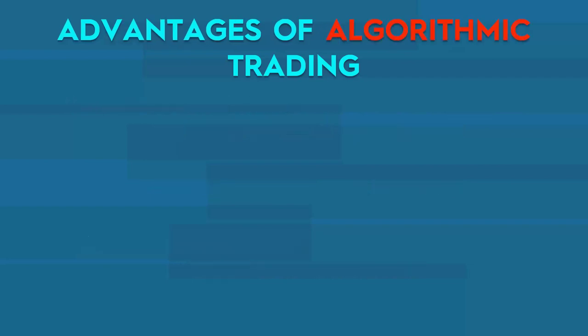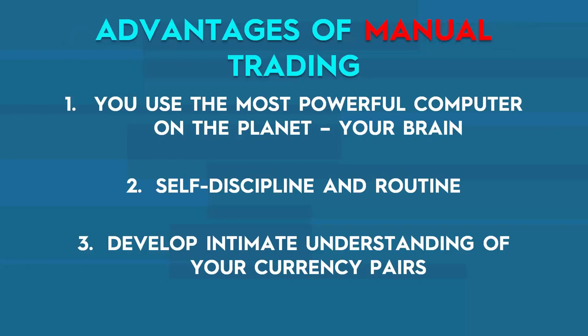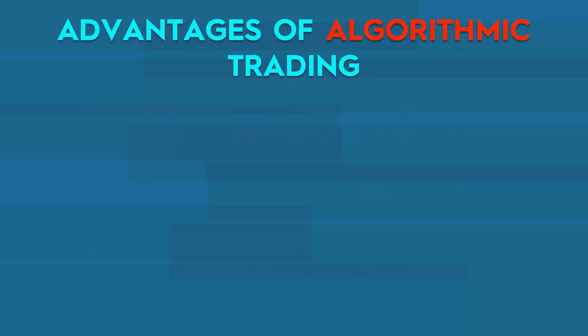Advantages of algorithmic trading. Number one — and by far my favorite — freedom of time. You don't have to sit in front of your computer. Both manual and algorithmic trading can give you financial freedom, but algorithmic trading also gives you freedom of time. You can do other things while your robots do your work for you. That convenience factor is a great advantage.